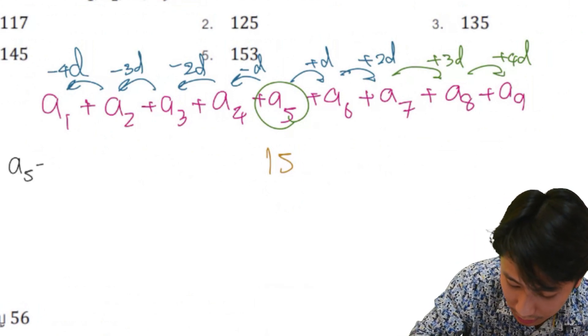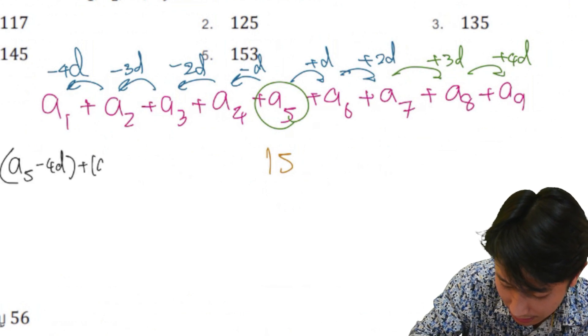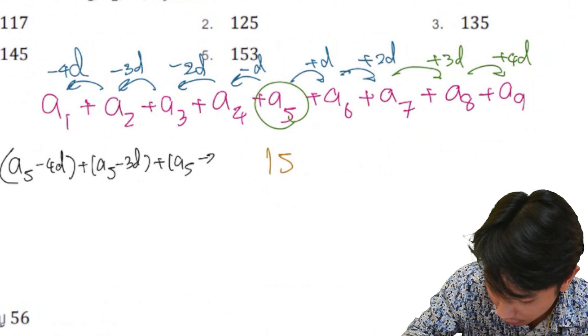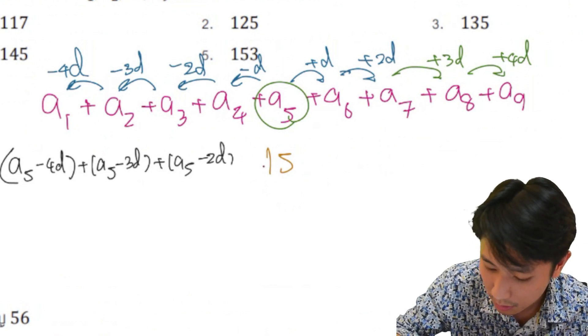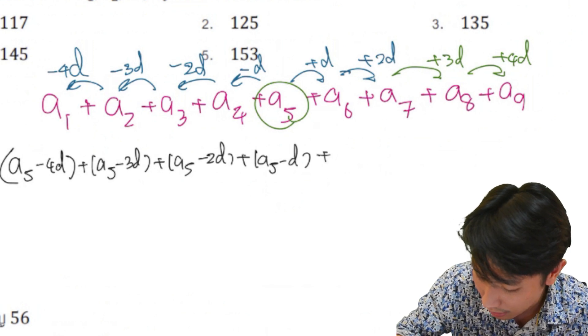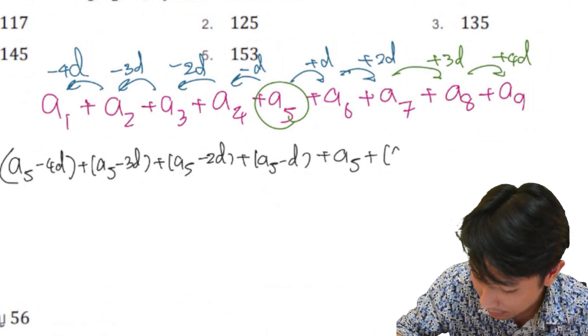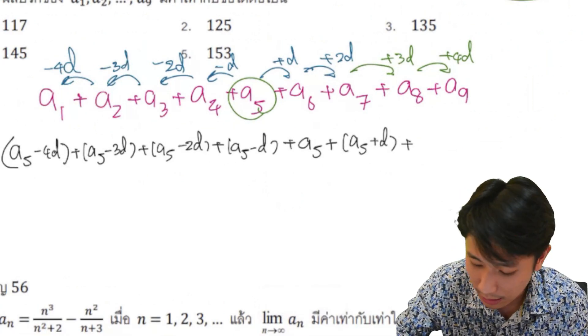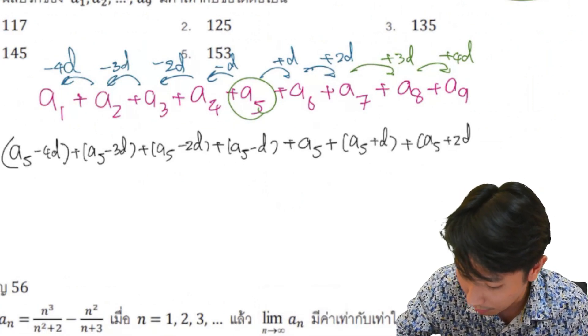This is A5-4D. Plus A5-3D. A5-2D. Plus A5-D. A5-2D. Plus A5, plus A5-D. And then the answer is like this. The answer is so good as this. A5 plus 2D.